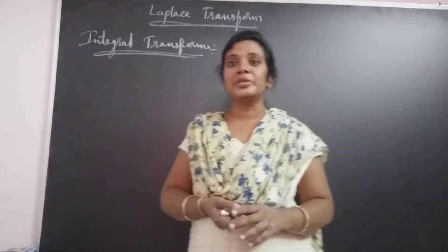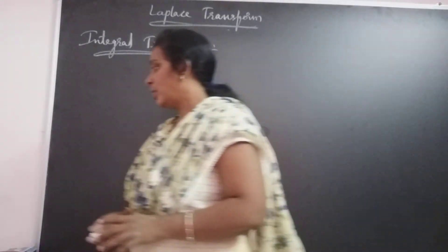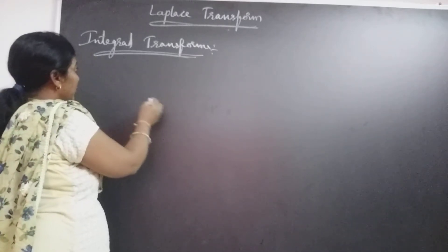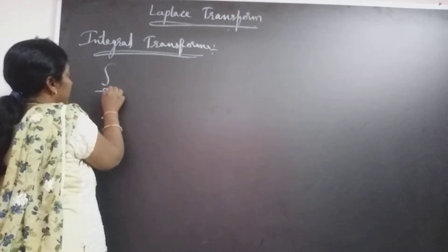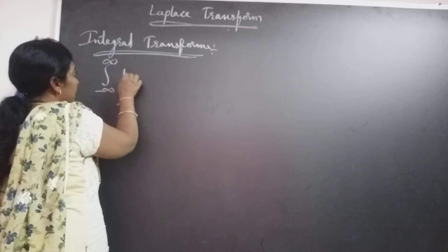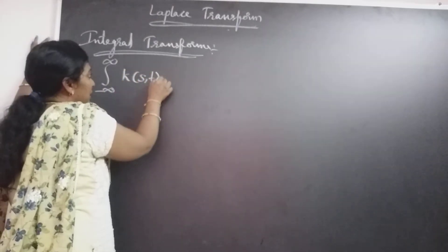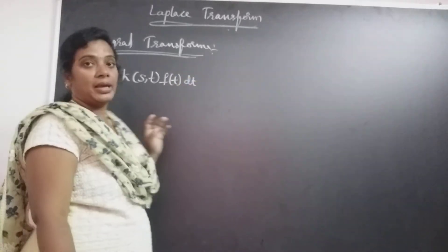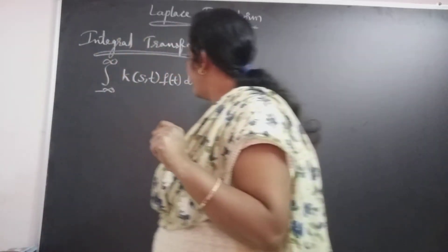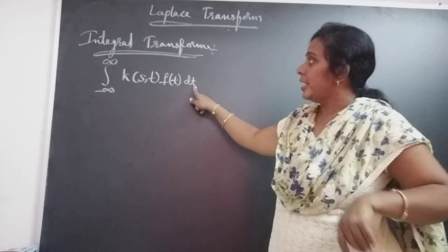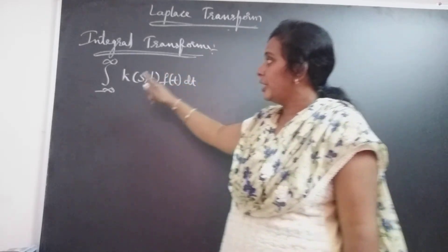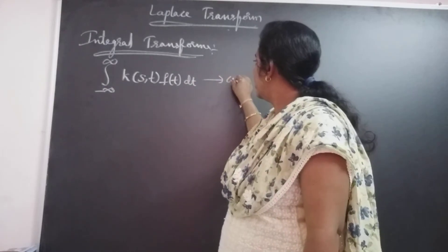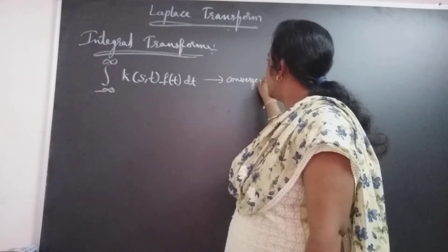Integral transforms can be defined using improper integrals. An improper integral of the form: integral from minus infinity to infinity of K(S, T) · F(T) dT. This is an improper integral defined from minus infinity to infinity, and it must be convergent.